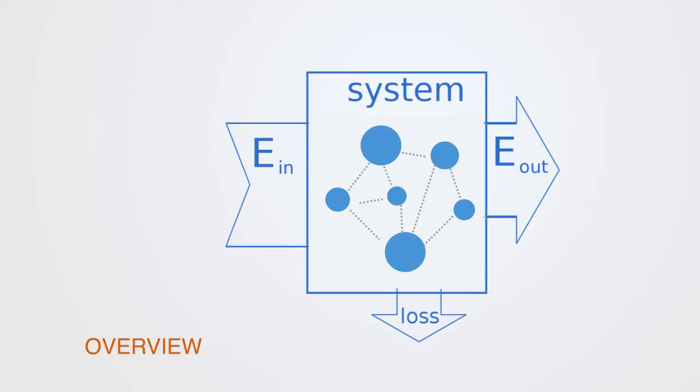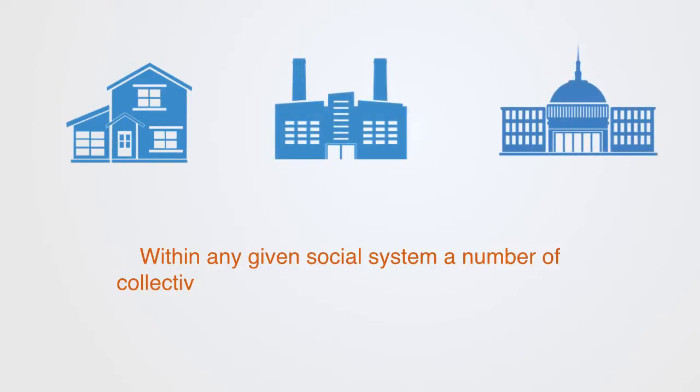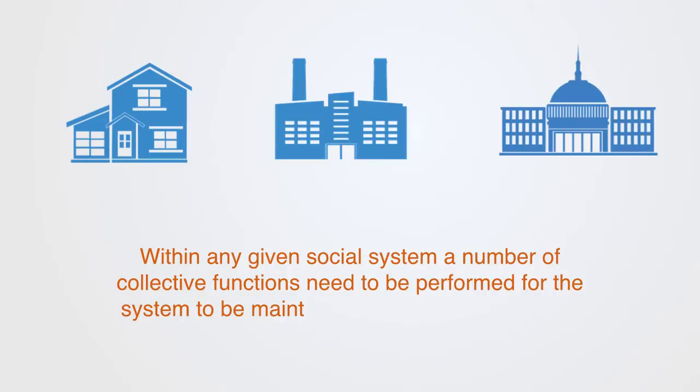Thus all systems perform some function. They take in resources of some kind and process those according to some set of instructions or rules in order to generate an output. This is of course the same for all social systems.